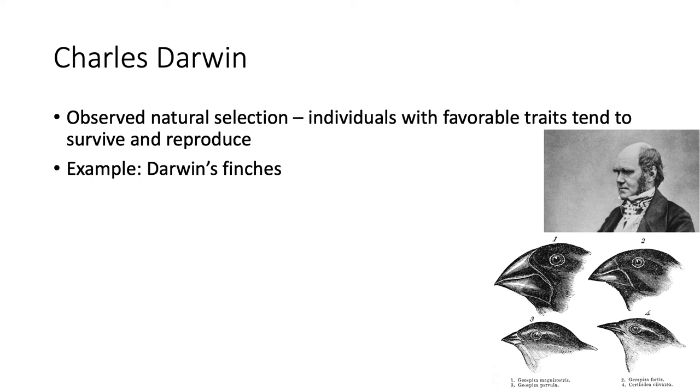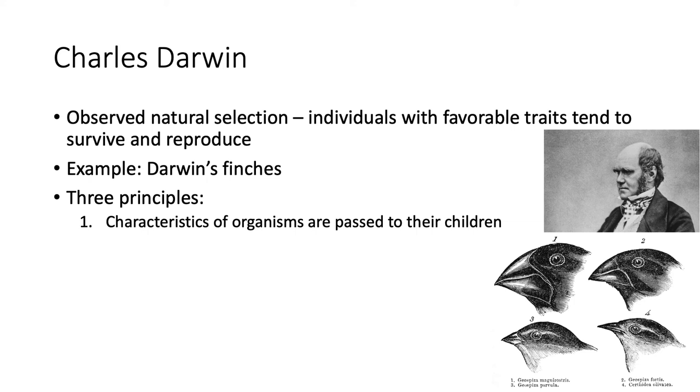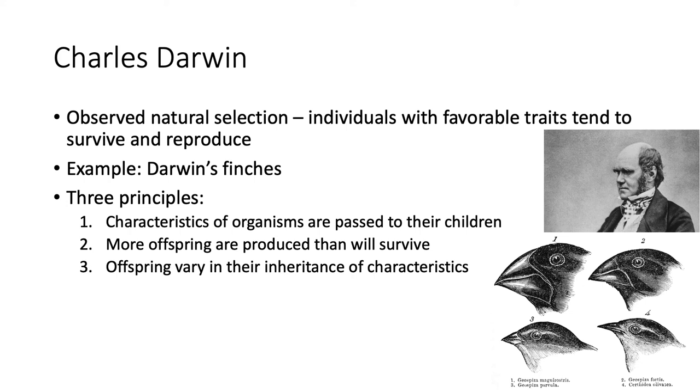Anyway, Darwin developed three broad principles that govern evolution based on his observations. One: characteristics of organisms are passed on to their children, which in modern day we know to be true due to genetics. Two: more offspring are produced than can survive. And three: offspring vary in their inheritance of characteristics, which we also know to be true using modern molecular genetics.